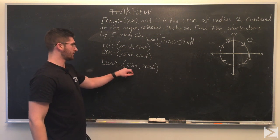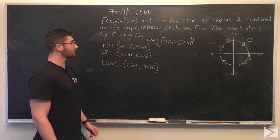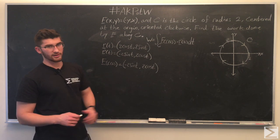So, f(r(t)) is going to be (-2sin(t), 2cos(t)), so it's the same as r'(t). So, let's go ahead and find the dot product of these.